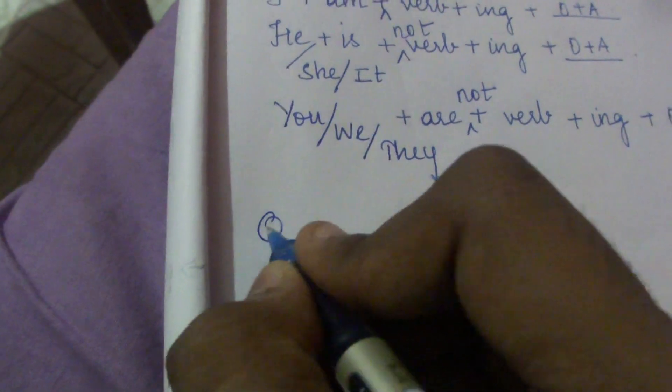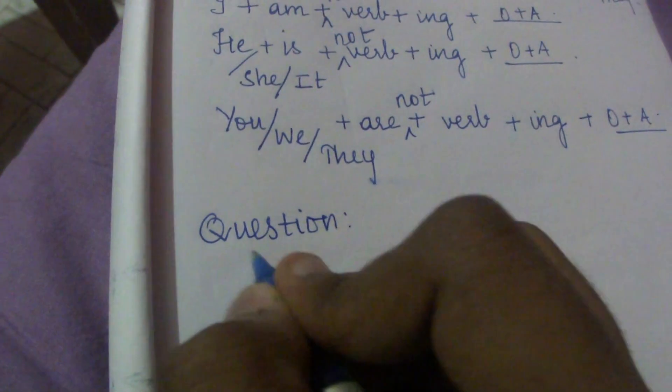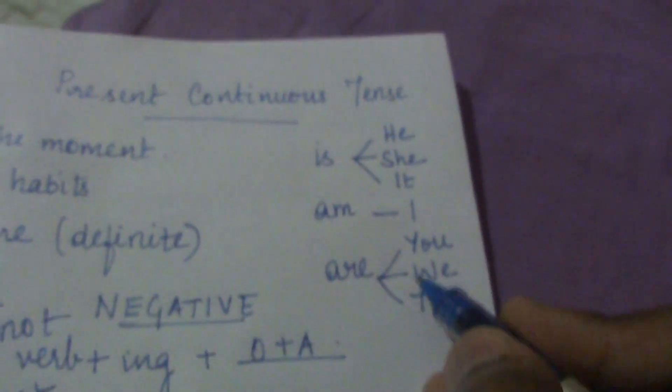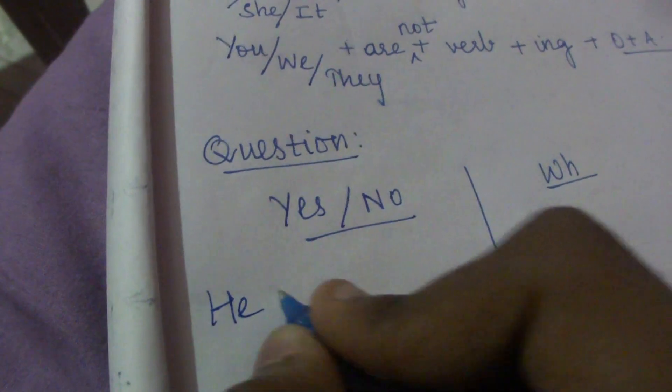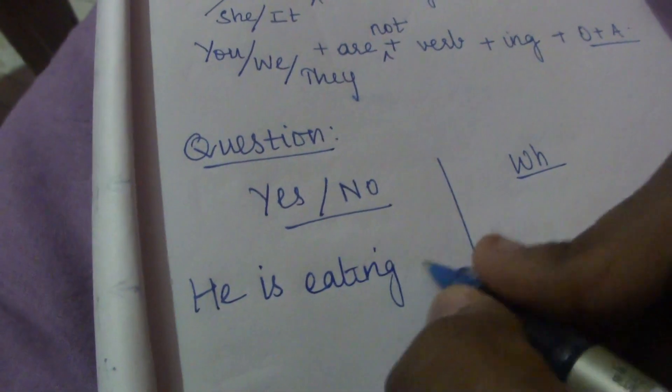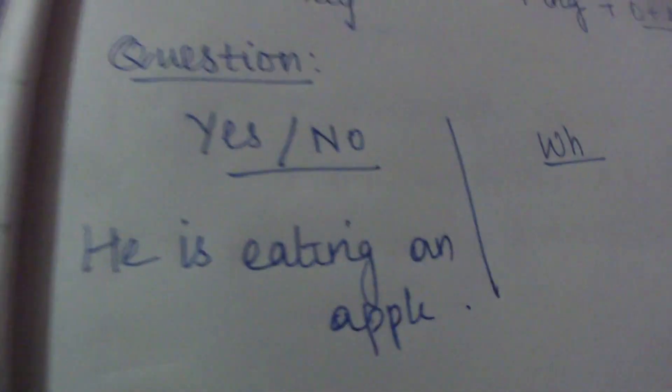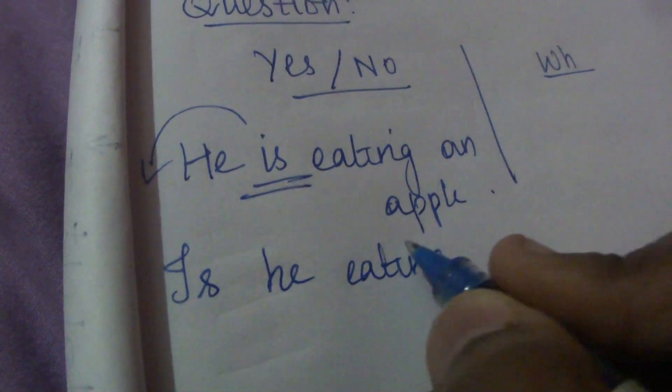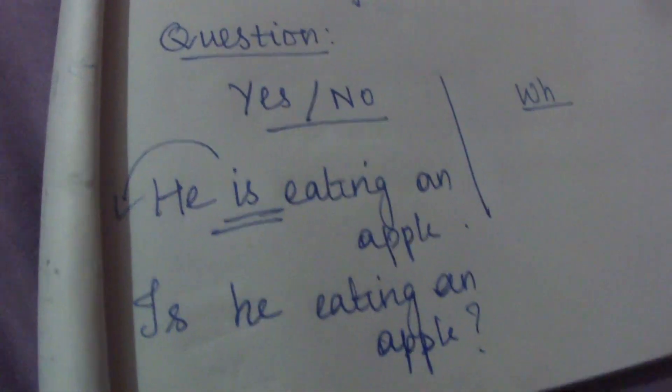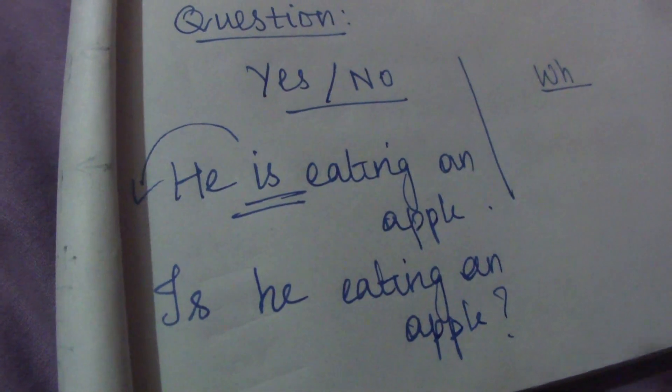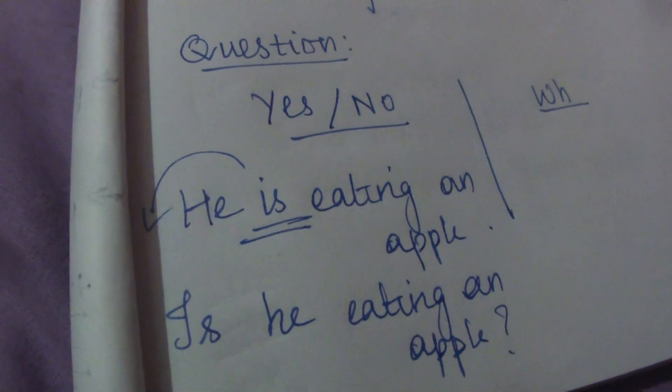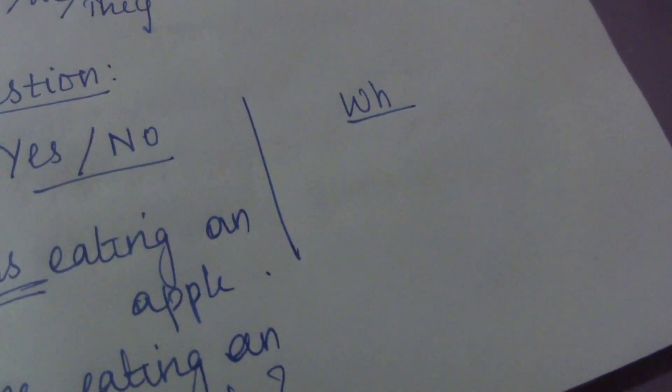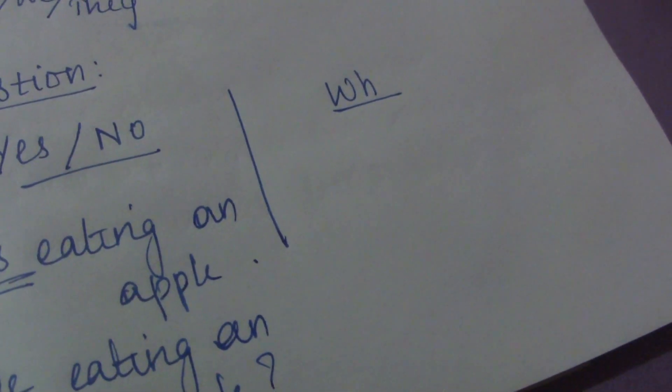And then we have question forms of present continuous tense which are of two types. Yes or no and WH. Yes or no questions begin with these three B verbs. For example, if I have he is eating an apple, how do I change this into a question? I have to bring the B verb to the front. So it becomes is he eating an apple with a question mark. Or if it is I am eating an apple, am I eating an apple? Are you eating an apple? Are we eating an apple? Are they eating an apple? All these questions come under yes or no types of questions as far as present continuous tense is concerned. Whereas for WH we have a lot of WH questions like what, where, why, where and how with which the present continuous tense can be applied and questions can be formed.